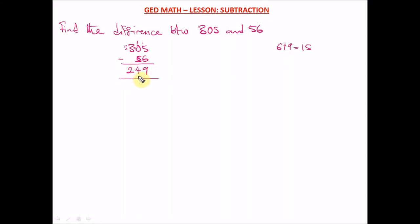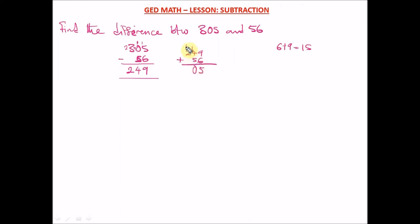To confirm this answer, in subtraction you verify by addition. Add the answer 249 to 56 and check that it gives 305. So: 9 + 6 = 15, write 5 carry 1; 1 + 4 + 5 = 10, write 0 carry 1; 1 + 2 + 0 = 3; and 0 + 0 = 0... giving 305. We are correct — that's how you confirm your difference.